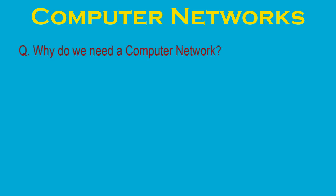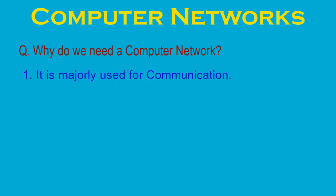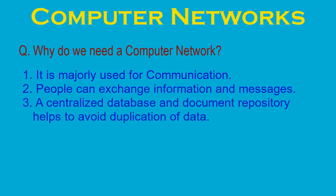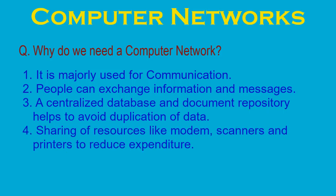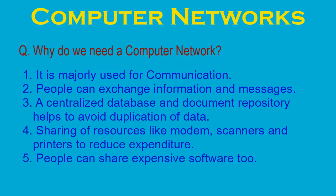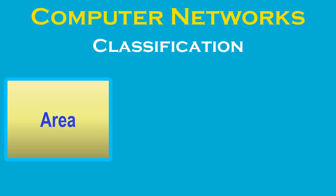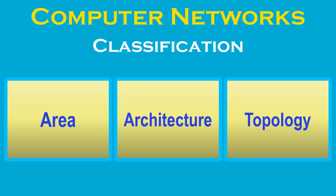Why do we need a computer network? A computer network is majorly used for communication. People can exchange information and messages. A centralized database and document repository helps to avoid duplication of data. It is used for sharing of resources like modems, scanners and printers to reduce expenditure. People can also share expensive software too.